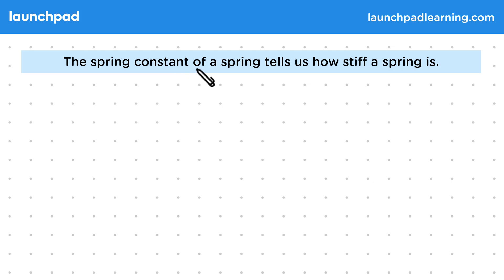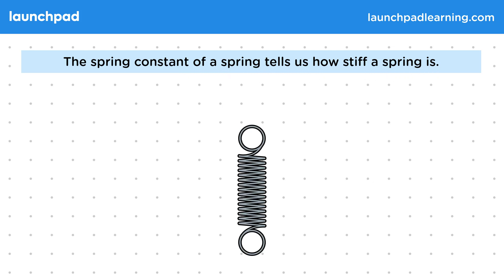The spring constant of a spring tells us how stiff a spring is. Remember that deformations occur when multiple forces are applied to an object. These include extensions and compressions.